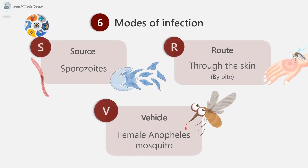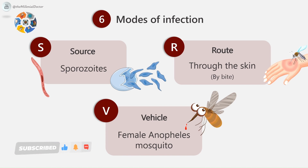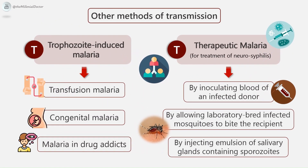Modes of infection: The infection is transmitted by the inoculative method. During the act of biting, the mosquito's proboscis pierces the skin and the salivary secretion is injected into the punctured wound. This droplet carries a large number of sporozoites, which are directly introduced into the bloodstream but cannot be found in it after about half an hour. The infective forms are sporozoites; the portal of entry is through the skin by the bite; the vehicle or transmitting agent is the female Anopheles mosquito; and the site of localization is first in liver cells, then in the erythrocytes or RBCs. Methods of transmission can be of three types: sporozoite-induced malaria, trophozoite-induced malaria, and therapeutic malaria. Injection of an emulsion of salivary glands containing sporozoites will also induce infection; this is called sporozoite-induced malaria.